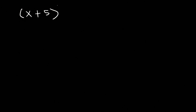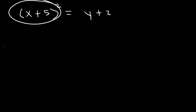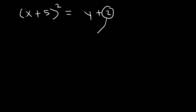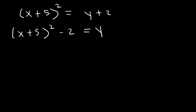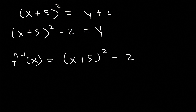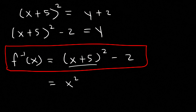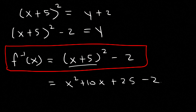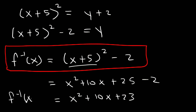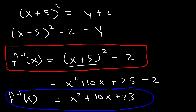Now, going back to that same problem, I want to show you something else. When we were at the step where we had x plus 5 squared is equal to y plus 2, if you choose not to FOIL this, what you can do is simply subtract both sides by 2. So we're going to have x plus 5 squared minus 2, which is equal to y. So you could say the inverse function is also equal to x plus 5 squared minus 2. If you want to simplify it, then you could expand this — which we know is x squared plus 10x plus 25 — and then minus 2, giving a final answer of x squared plus 10x plus 23. You can write the answer both ways because they're equivalent to each other.